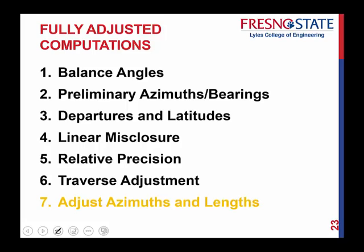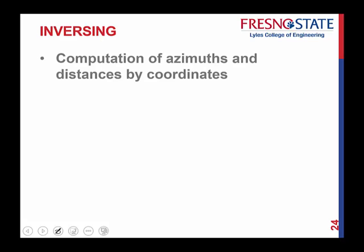So that was our adjustment. The last part is to compute our final azimuths and final lengths. We do what's called inversing - you take coordinate values and compute the azimuth and distance from them. The tangent of the azimuth is equal to the departure over the latitude, and the length is the square root of the departure squared plus the latitude squared.